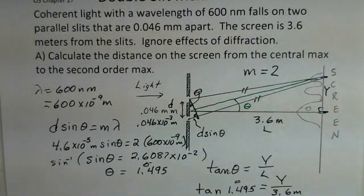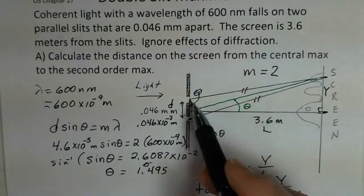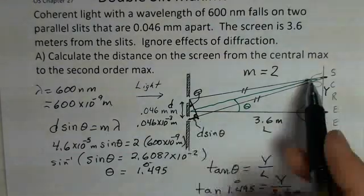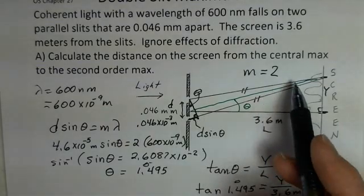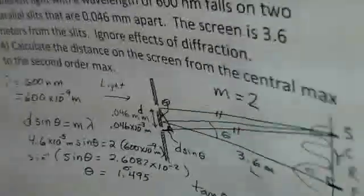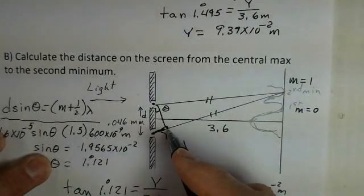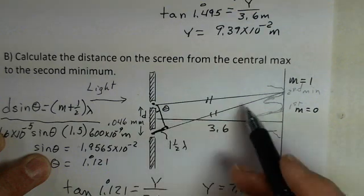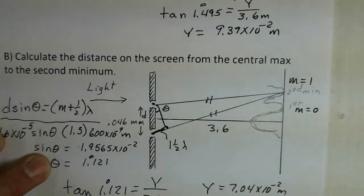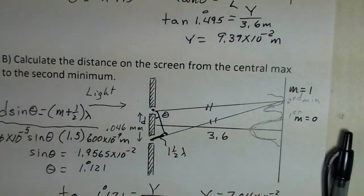For the case of constructive interference, where the bright spots are located, d sine theta equals m lambda, we want an integer number of wavelengths here. So we get peak and peak traveling together, arriving at the same time, or valley and valley. So we have constructive interference for the maxima. We have destructive interference as peak and valley, or the other half cycle, peak here and valley up here, arrive out of phase at the screen, and produce a dark spot. Keep practicing and ask your instructor some questions.